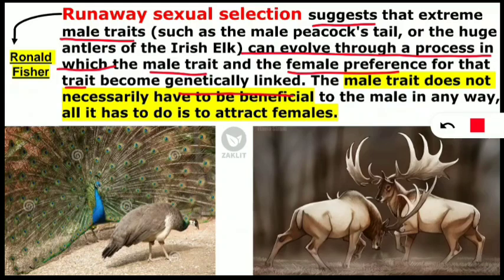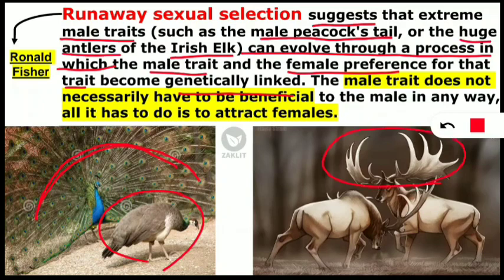For example, the male peacock's tail — as you can see in this picture, the male peacock is projecting its tail in a fashionable manner so that the female peahen is attracted and their generation increases. Similarly, in the case of the Irish elk, the huge antlers — you can see the antlers here — females are attracted toward larger or more decorative antlers, which are the attractive feature for the female partner.